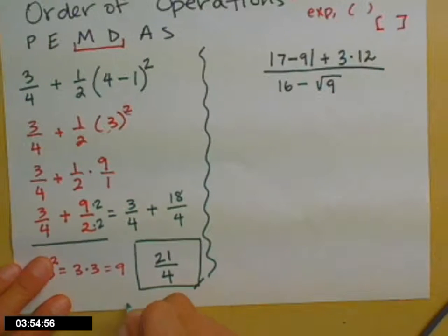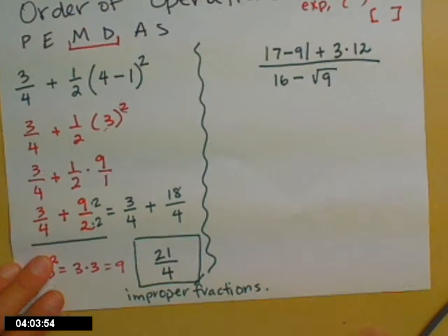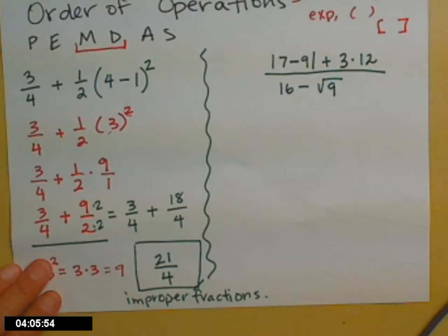In our world now, an improper fraction where the top number is bigger than the bottom is acceptable, is preferred, in fact. So you don't want to turn this into a mixed number because probably you'll have to turn it back. So leave it 21/4 because it doesn't reduce.